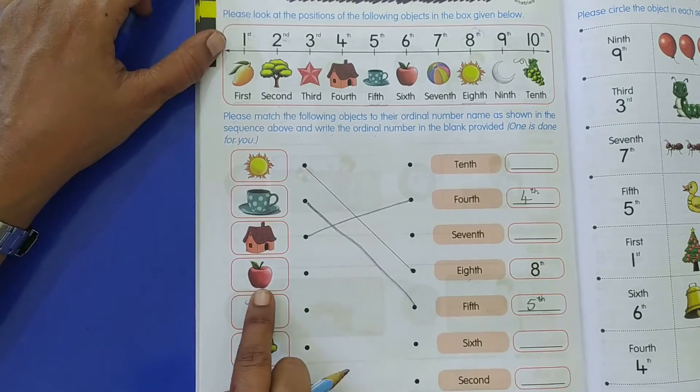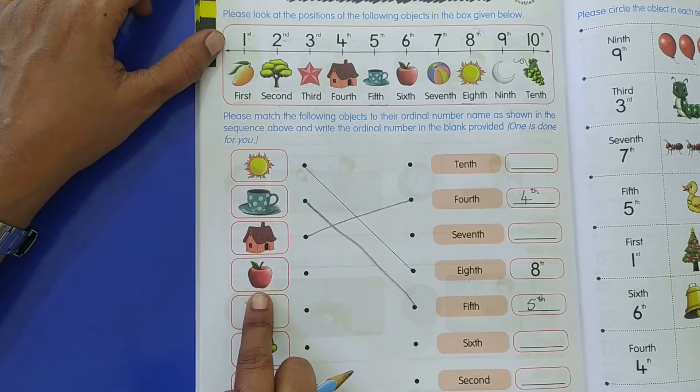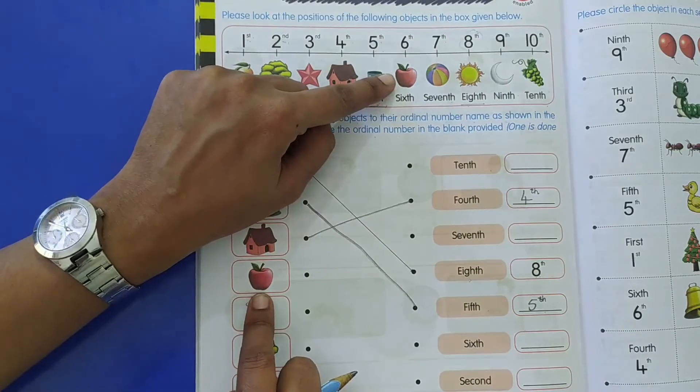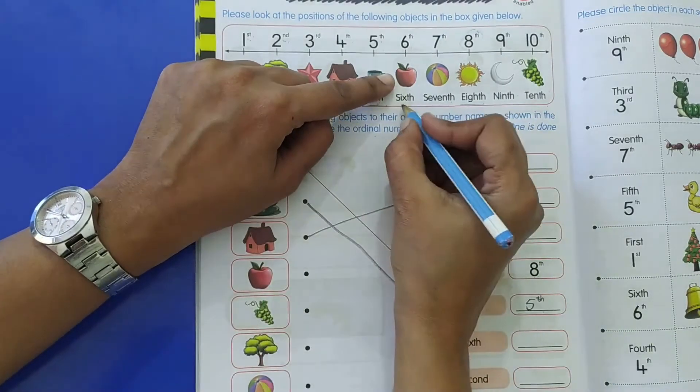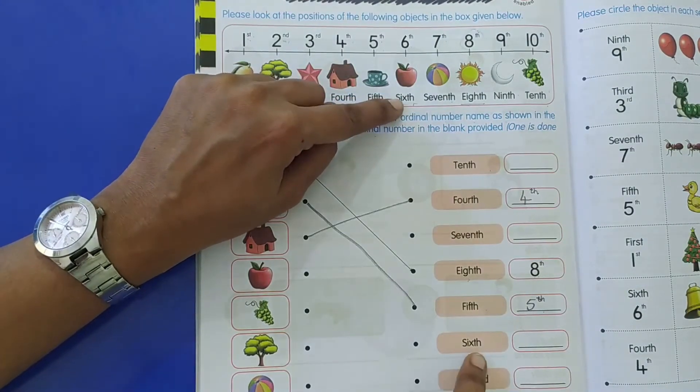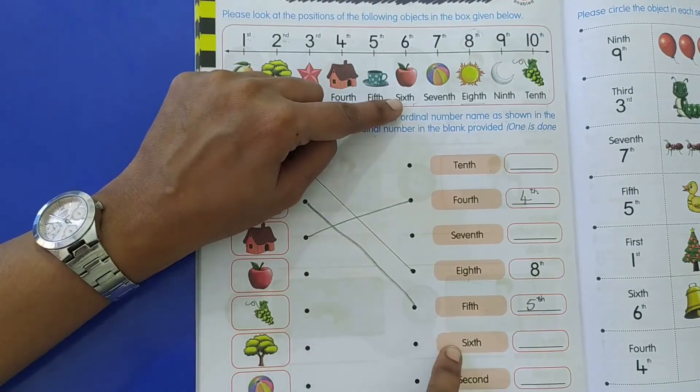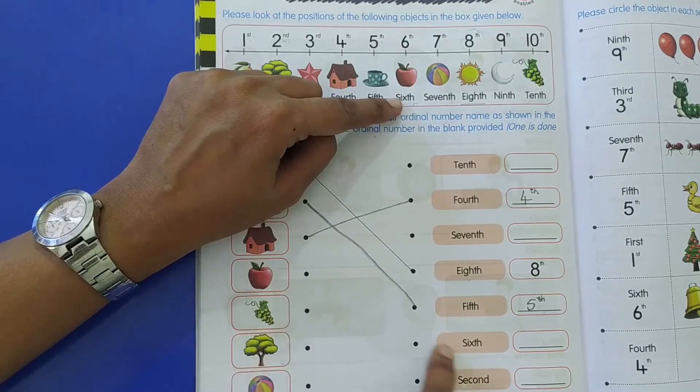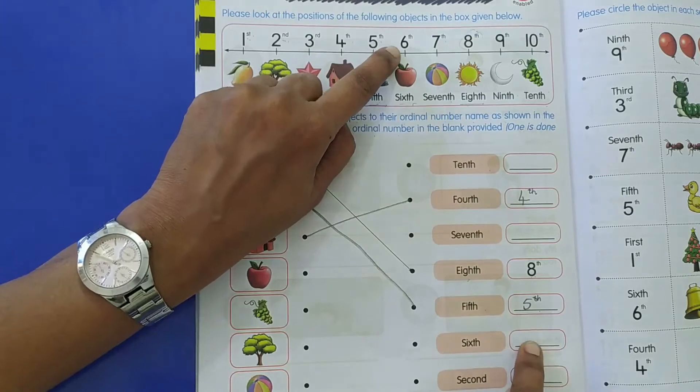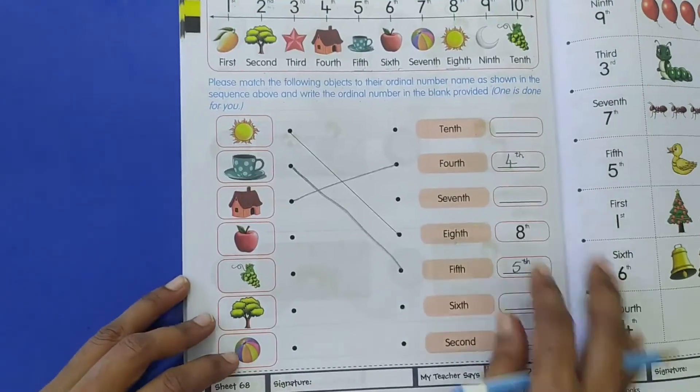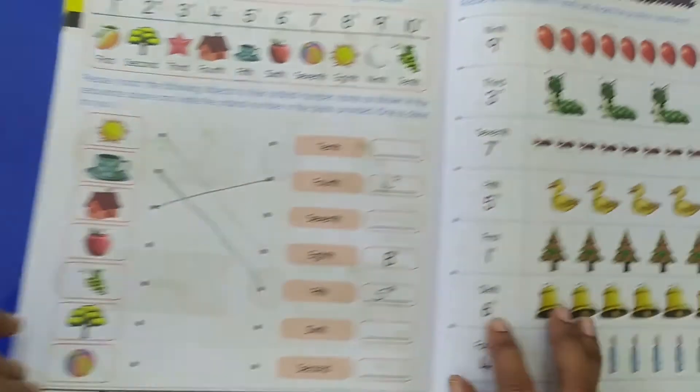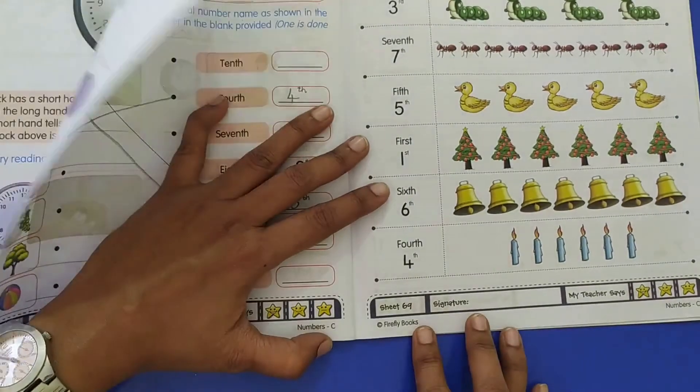So this is how children you will check for each object, where is their position on the number line, what is the spelling. Like apple is 6th, so where is 6th? S-I-X-T-H. So you will match it to their ordinal position name and you will write the number 6th. This is your activity on page number 68. Now on page number 69...